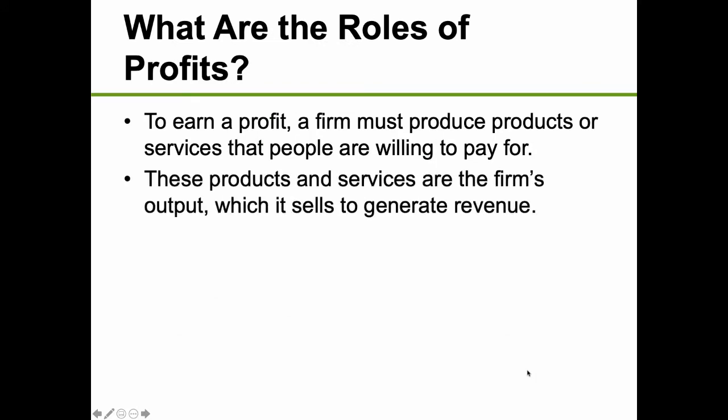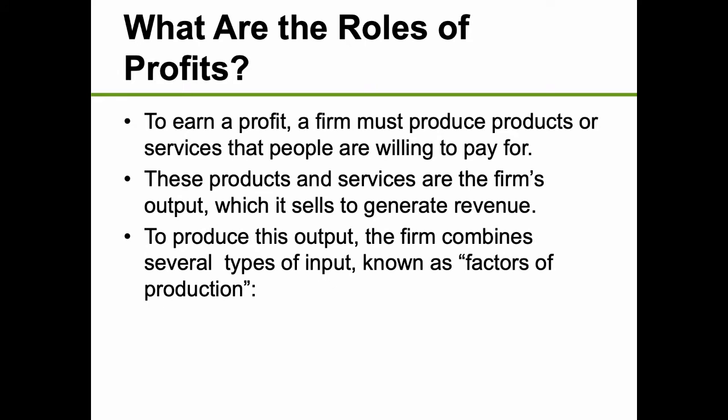The products and services a firm produces generate revenue. But to produce output, the firm needs inputs — sometimes called factors of production. The firm takes these factors of production, combines them, and then sells the output to buyers. In economics, we categorize inputs very loosely. We could come up with a list of inputs ten miles long if we specified every single one, but instead we categorize them very broadly.